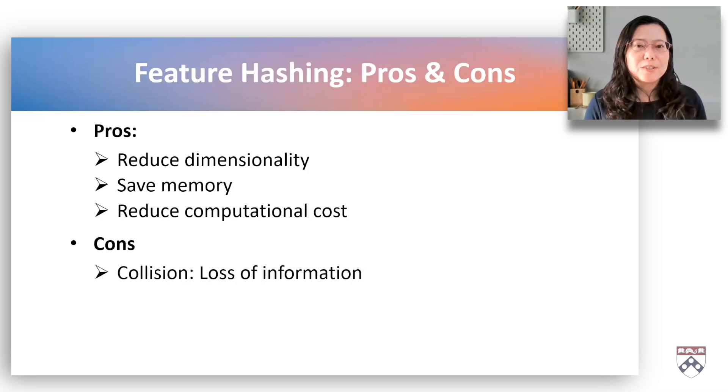However, feature hashing has some trade-offs. Clearance may introduce some loss of information, and interpreting the result can be more challenging than with traditional one-hot encoding.